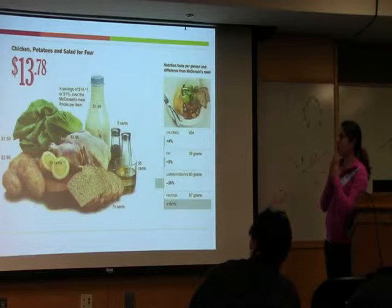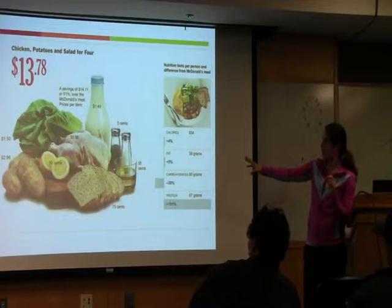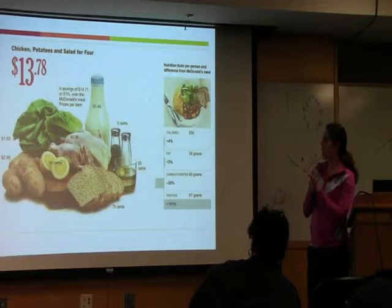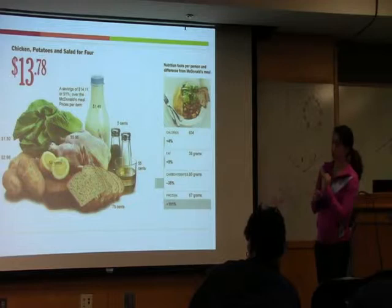Instead, if you go to the grocery store, you could spend $13 and buy a whole chicken, some bread, some potatoes, and some salad. You're spending a lot less money, and you have some vegetables and some milk. It will take a little bit longer to cook, but you saved quite a bit of money too.